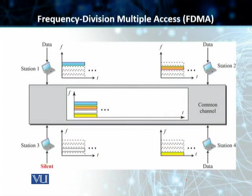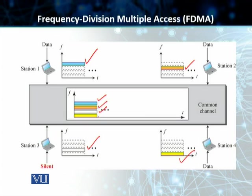As you can see on the slide, in this particular case we have a frequency band allocated to station one, a second band allocated to station two, station three has a band allocated but it is silent in this case, and the last band is allocated to station four. Each one of these stations is using its own band to send its transmission on the common channel, and therefore they can all send their transmissions at the same time.